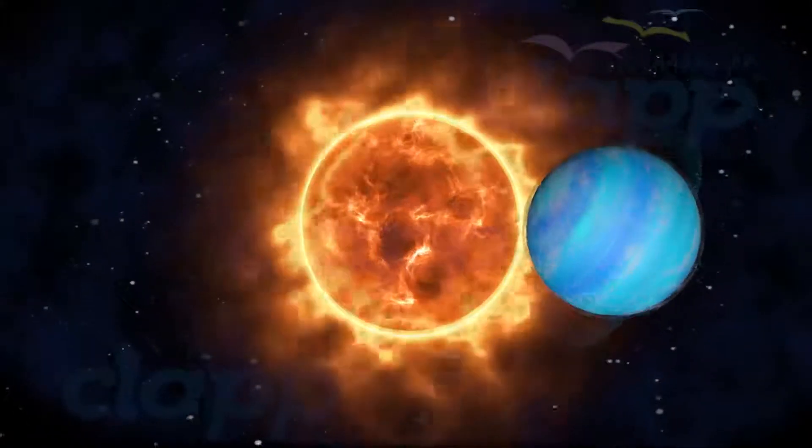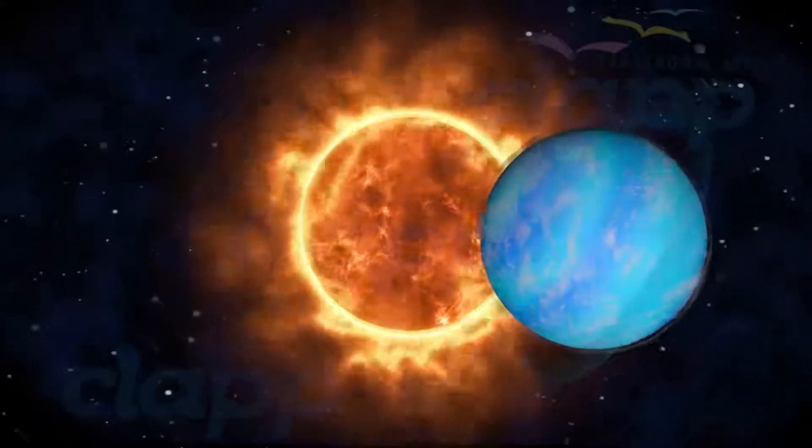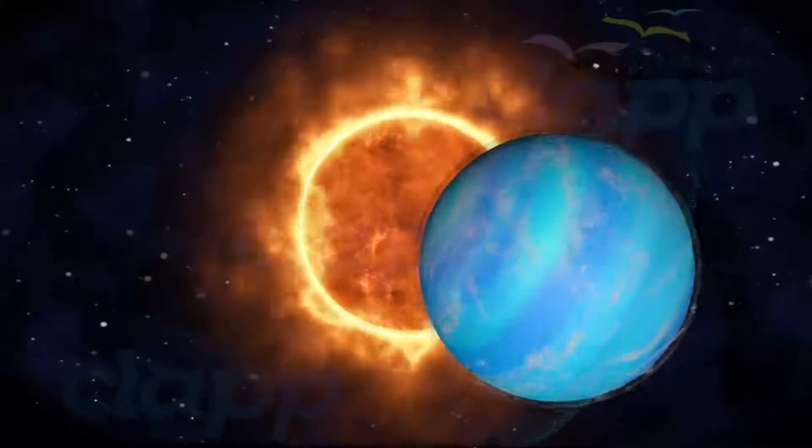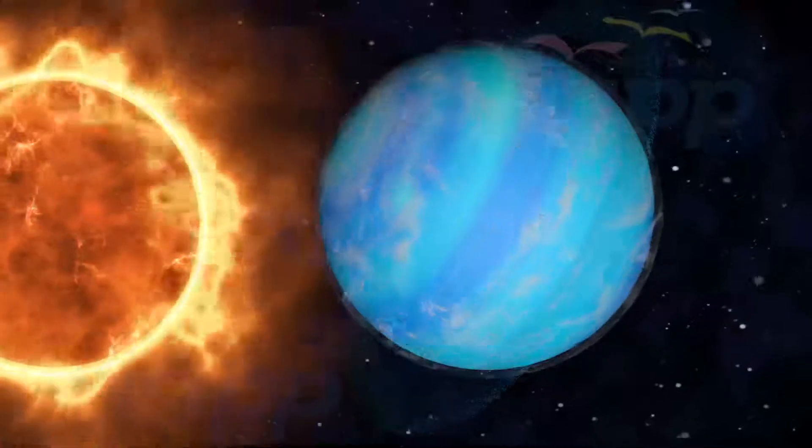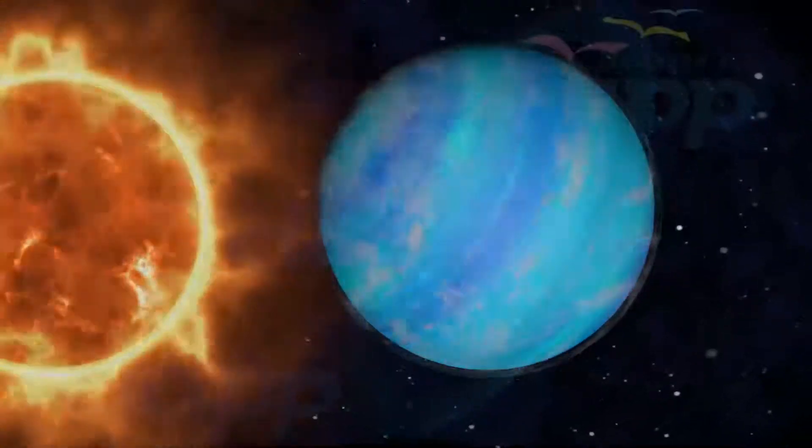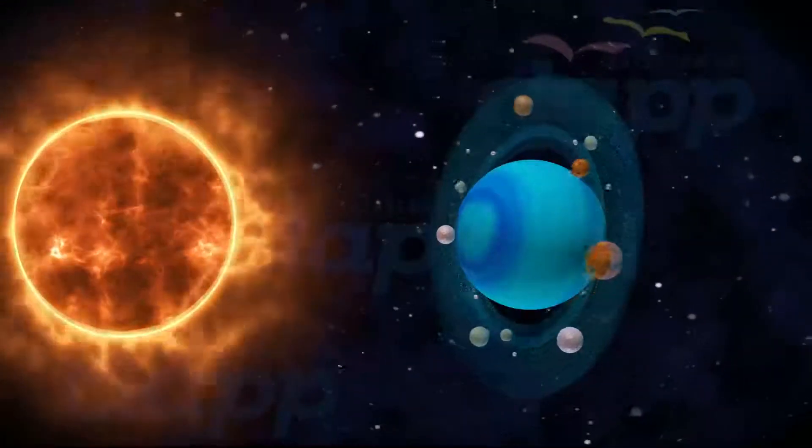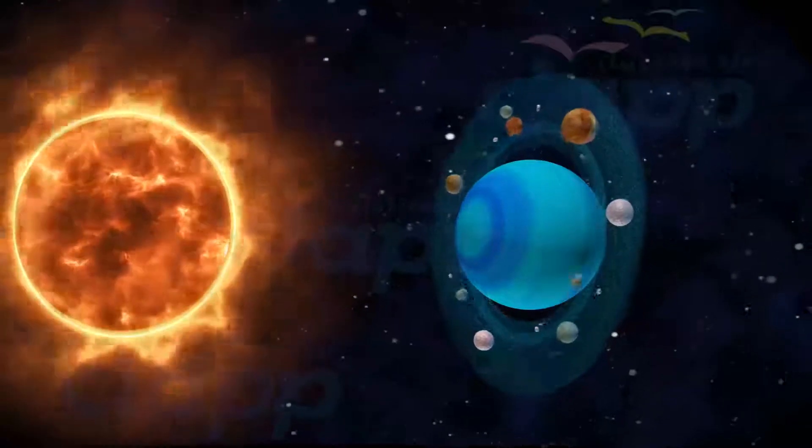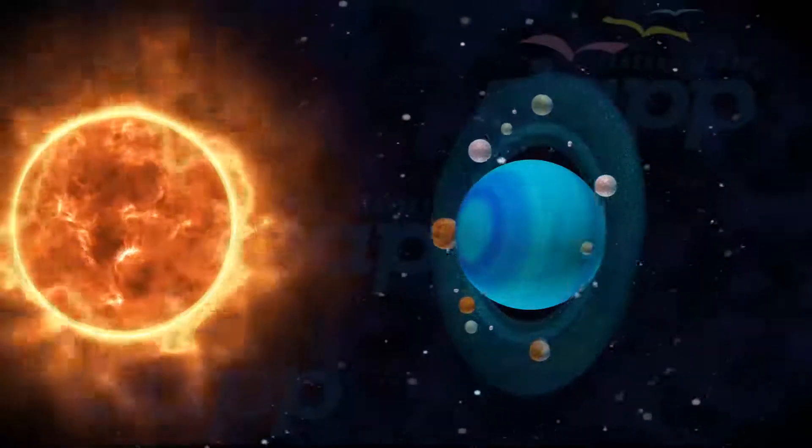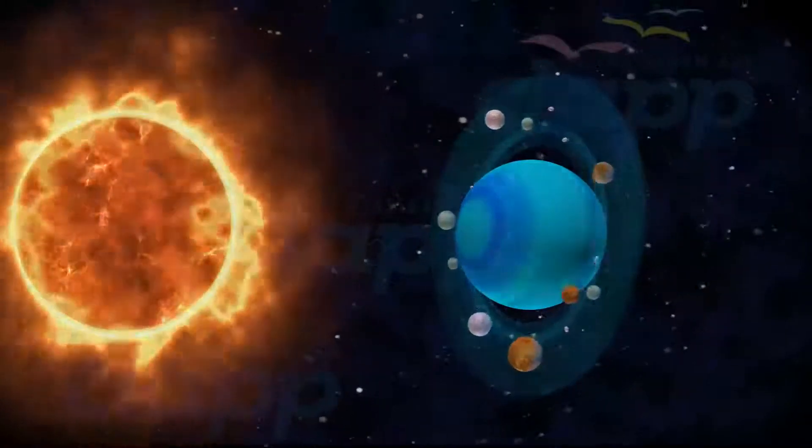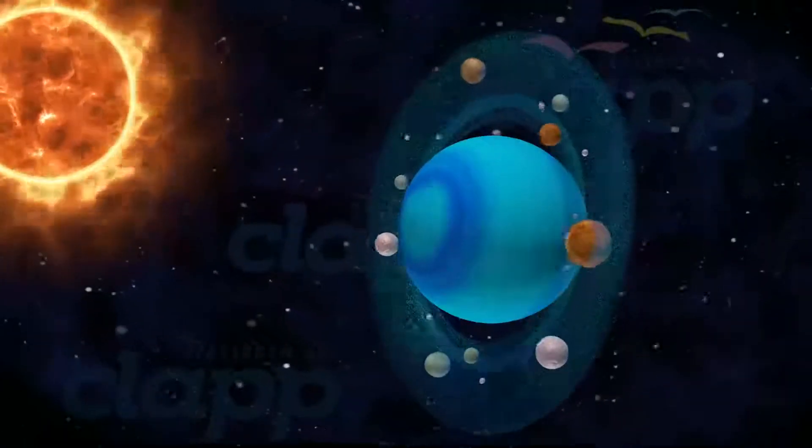Uranus is the seventh planet from the Sun and the third largest in the solar system. The Uranian system has a unique configuration because its axis of rotation is tilted sideways. Uranus rotates in a clockwise direction on its own axis and orbits around the Sun in an anti-clockwise direction.